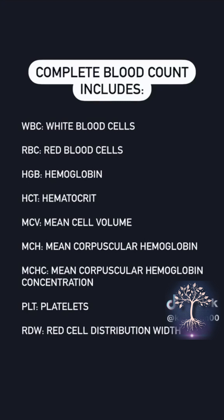The Complete Blood Count includes white blood cells, red blood cells, hemoglobin, hematocrit, mean cell volume, mean corpuscular hemoglobin, mean corpuscular hemoglobin concentration, platelets, and your red cell distribution width.